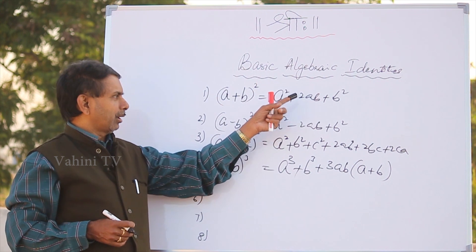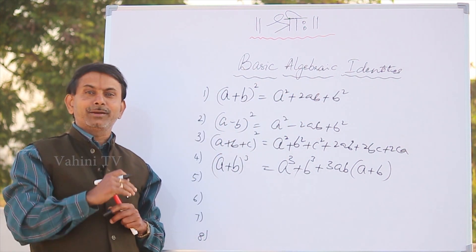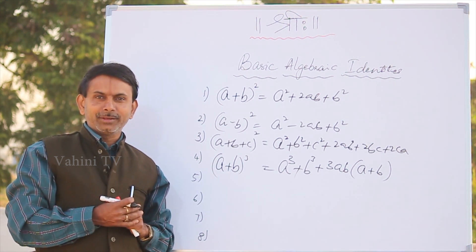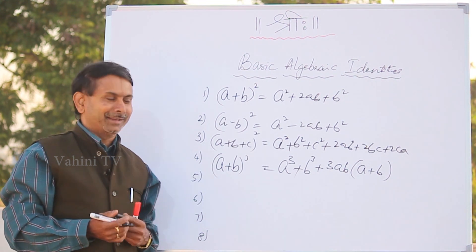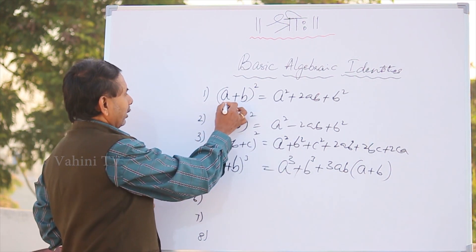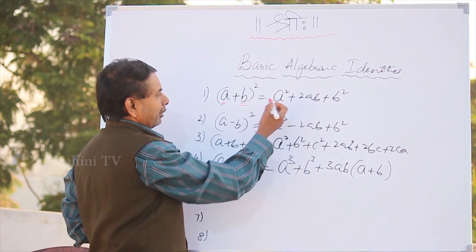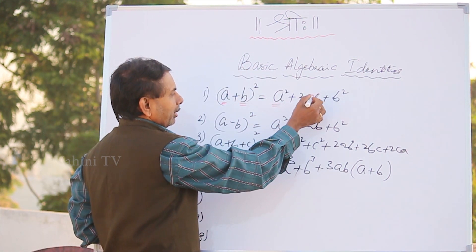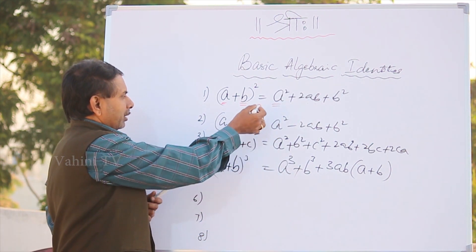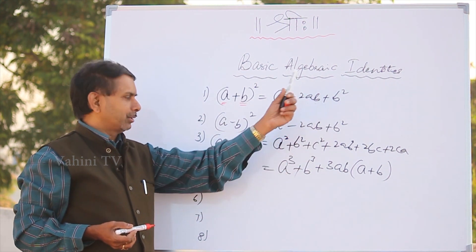a plus b whole square equals a squared plus 2ab plus b squared. Using the idli-chutney analogy: idli squared plus 2 times idli into chutney plus chutney squared. And for a minus b whole square: idli squared minus 2 idli into chutney plus chutney squared.